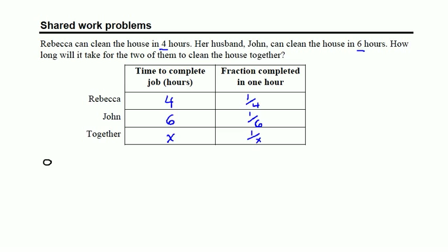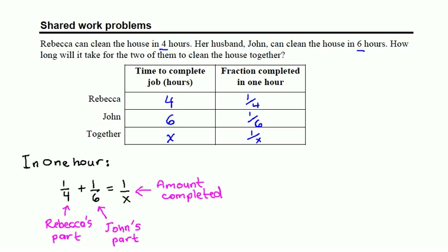The way that we get our equation here is by seeing what happens in one hour. We can see that if they're working together, then in one hour we would have Rebecca's portion, plus John's portion, should equal the fraction of the job that got completed by both of them working together. So we can see that our equation comes from looking at what happens in one hour.